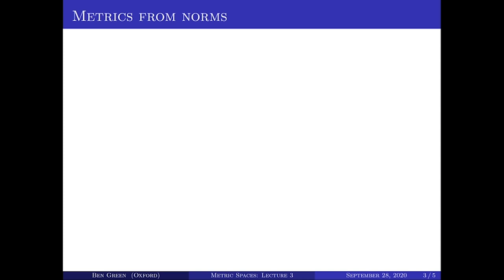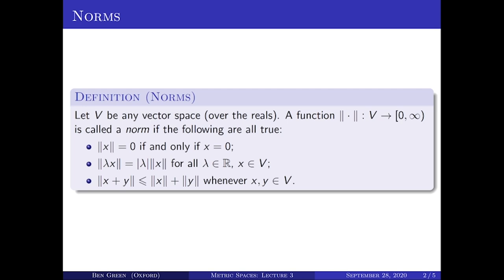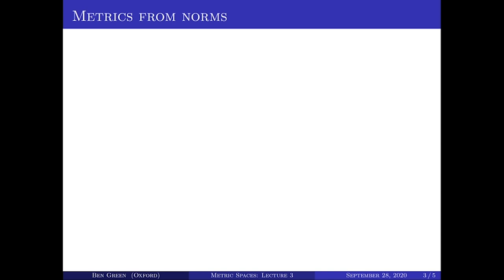Let's have a quick look at the definition of a norm on a vector space. We showed last time that when V is R to the n, the familiar Euclidean norm is indeed a norm. It fairly obviously satisfies the first two points, but the key thing that wasn't so obvious is that it satisfies the inequality that the norm of X plus Y is bounded above by the norm of X plus norm of Y. We proved that using the Cauchy-Schwarz inequality.